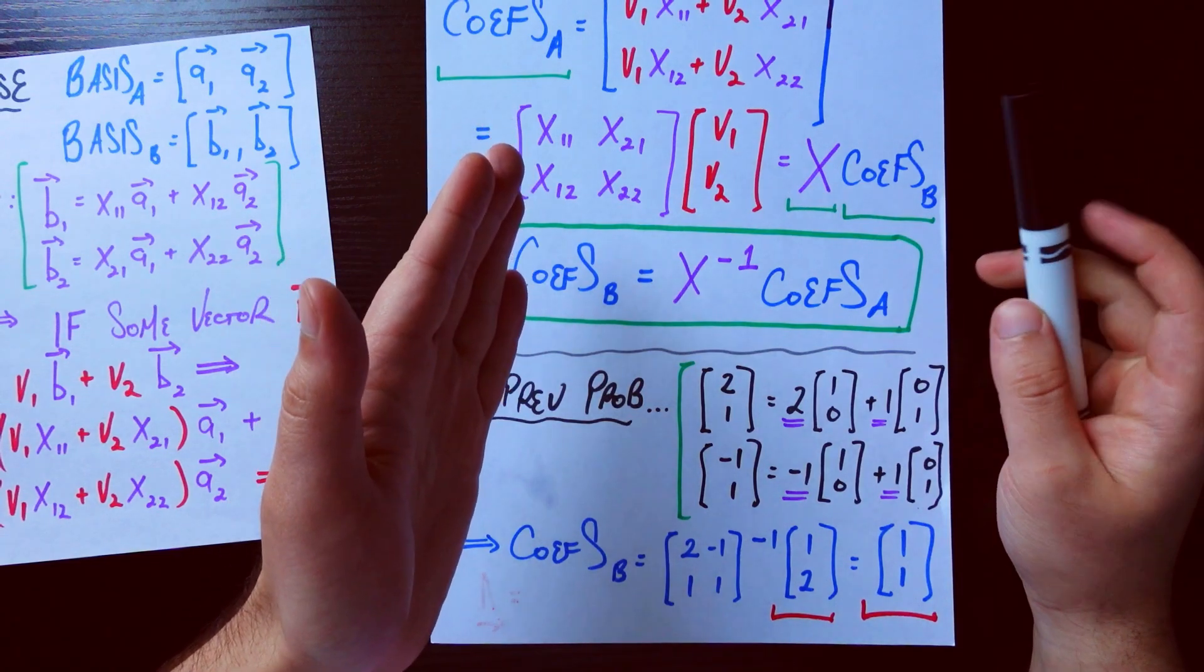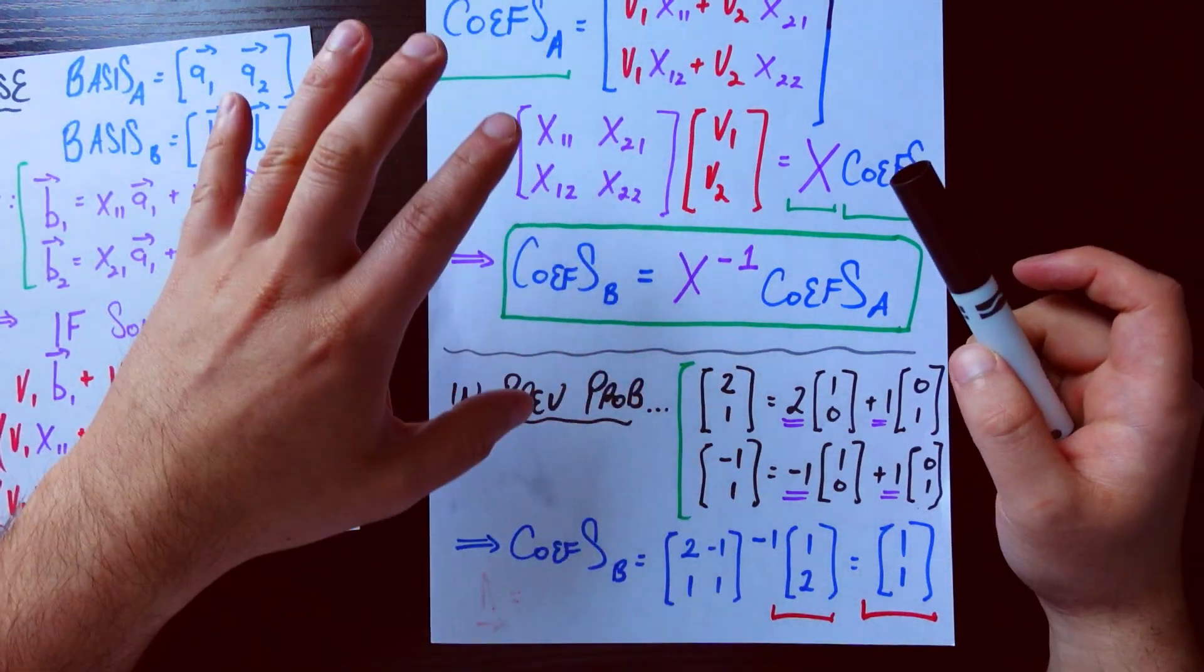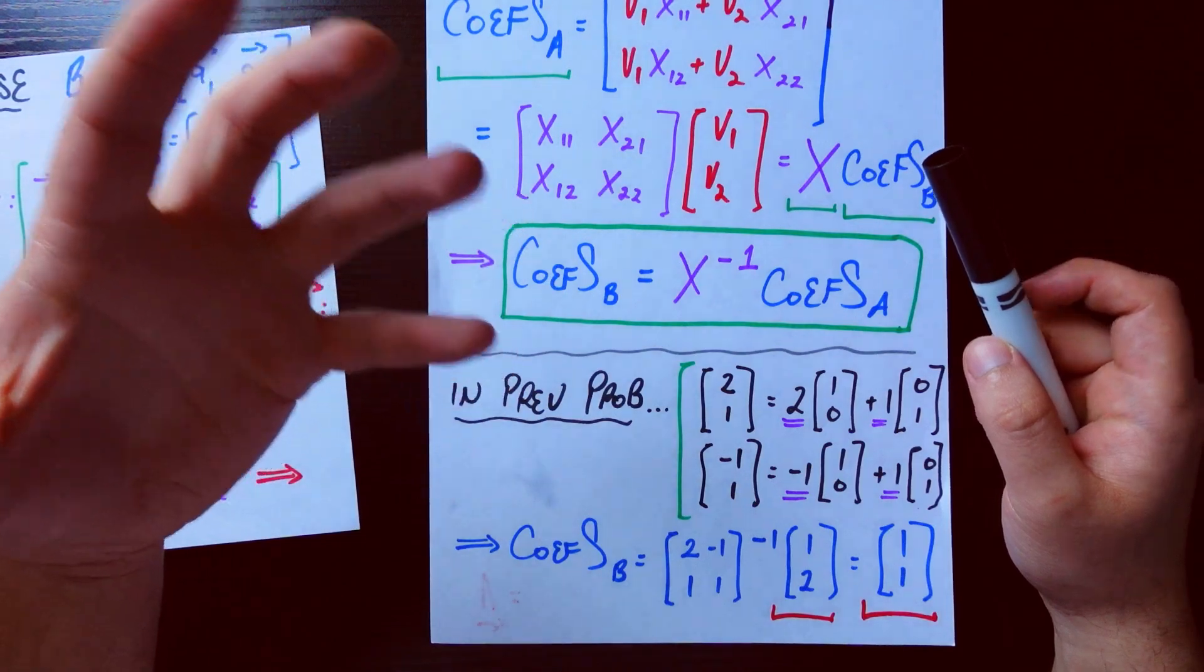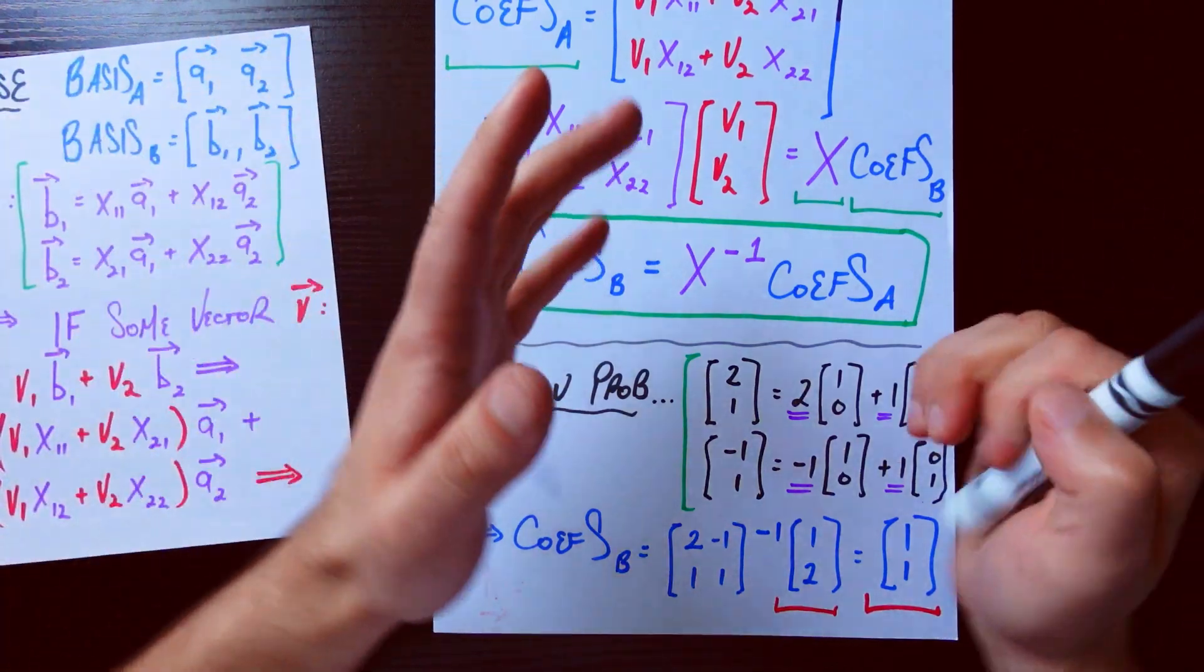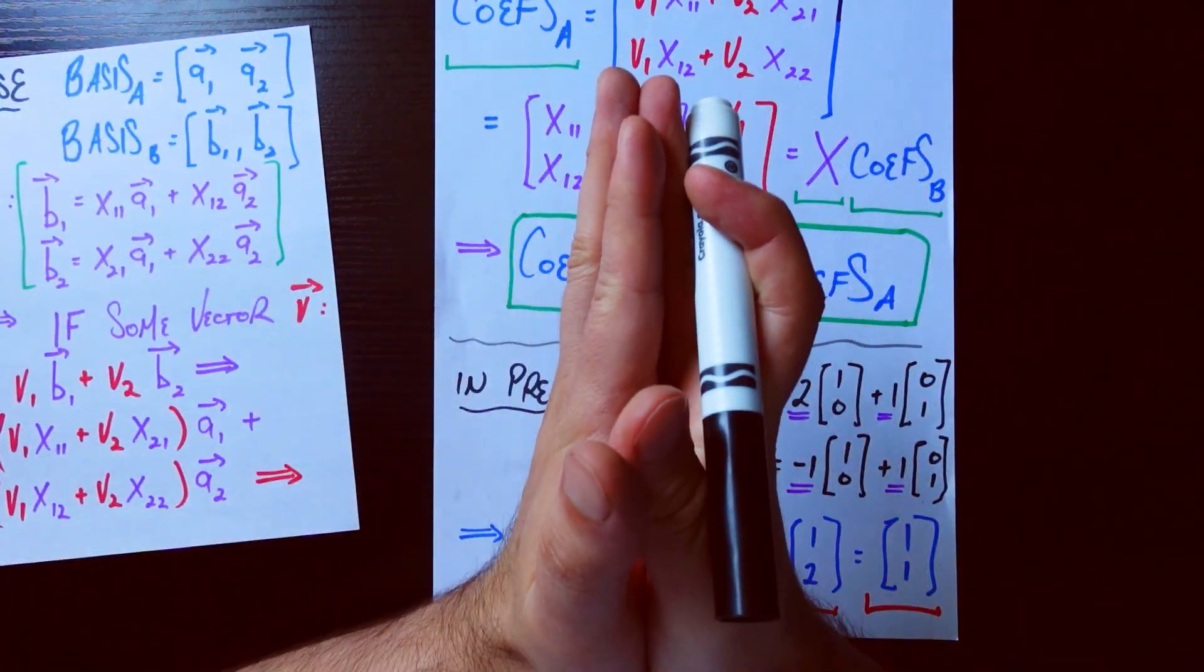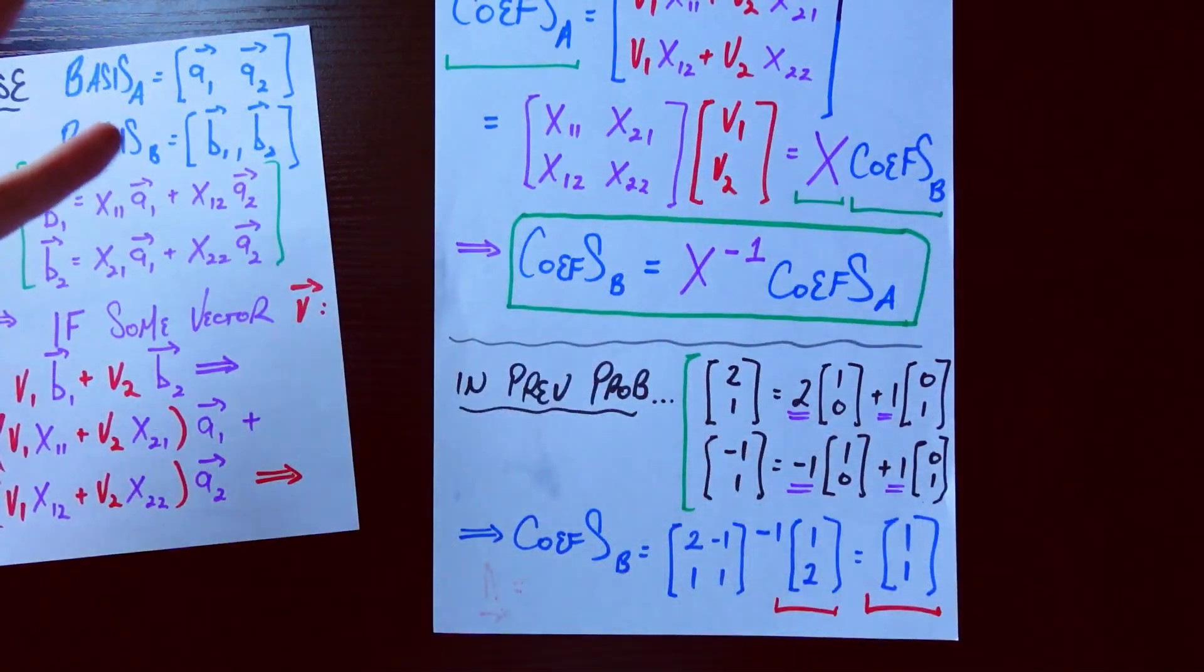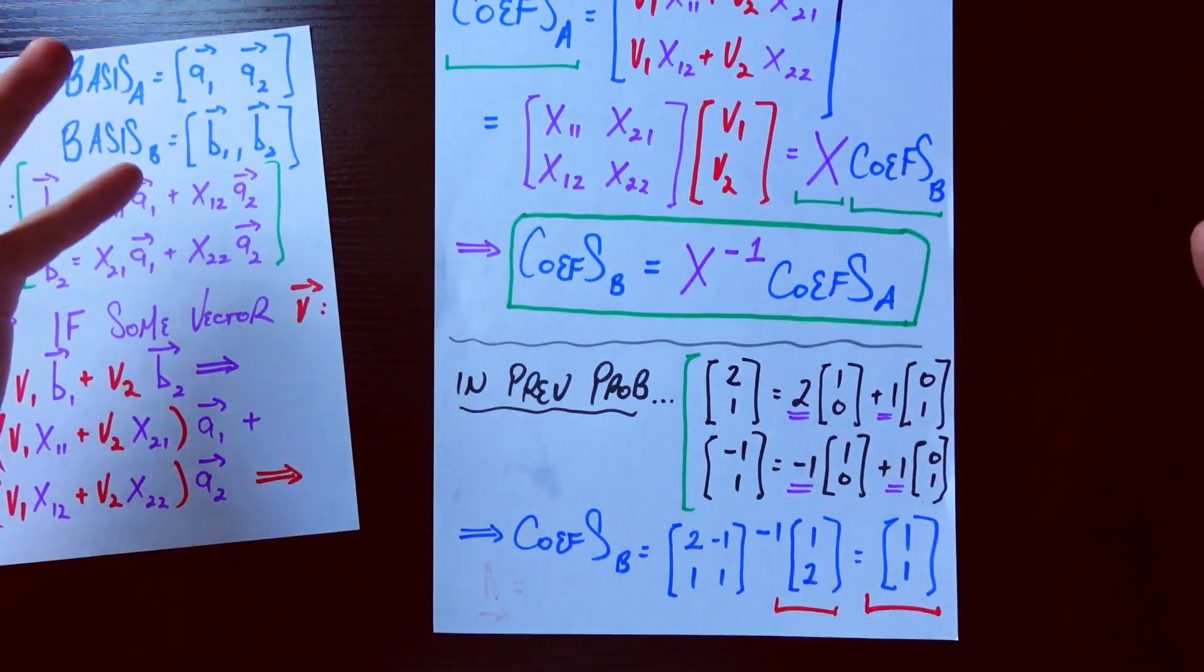You cannot have basis vectors that are parallel to each other, which is what it would mean for this guy to be a linear combination of this guy. The reason you can't have that is because you cannot span the whole space. So there's a secret kind of cool thing going on. That the fact that this guy needs to be invertible enforces that you need the basis vectors not to be parallel to each other. Or as you get into higher dimensions, enforces that they need to span the entire space.